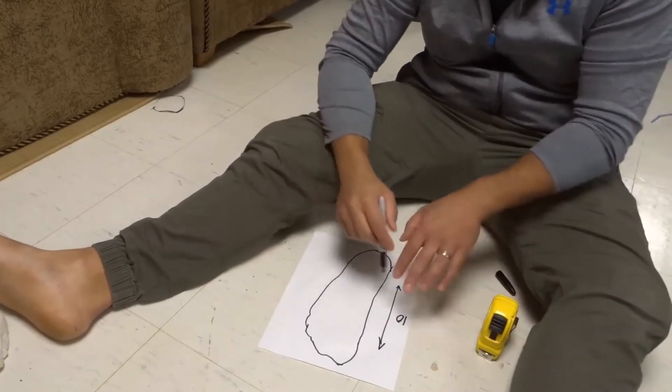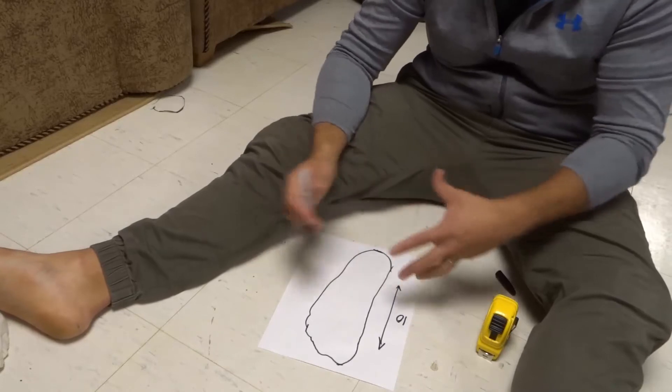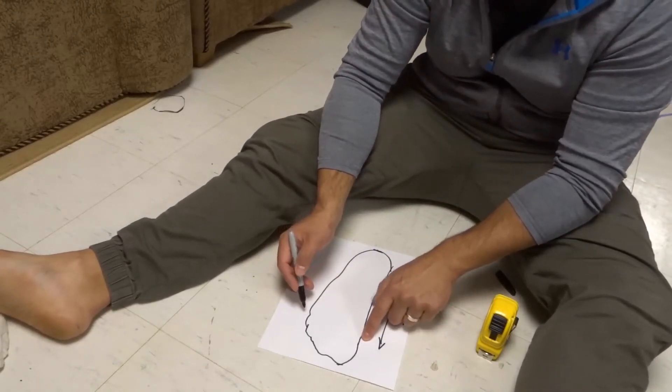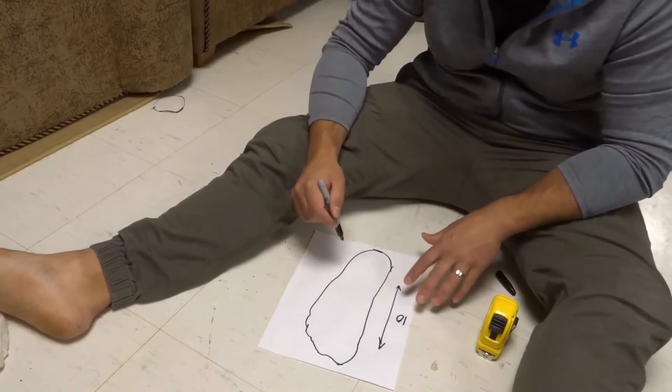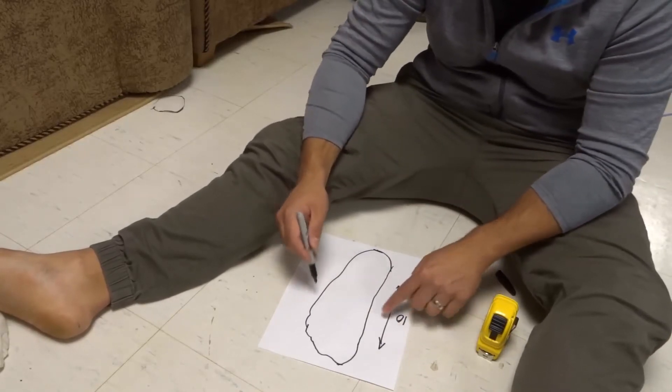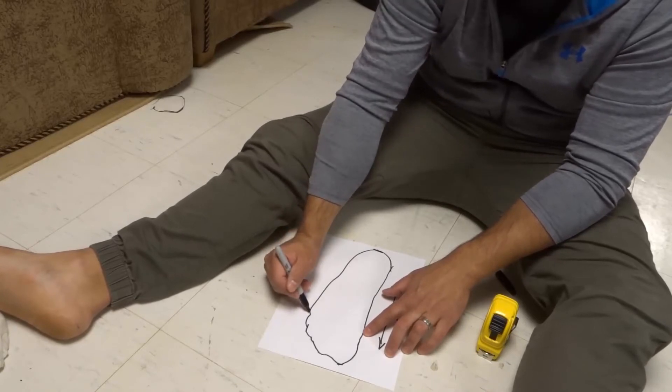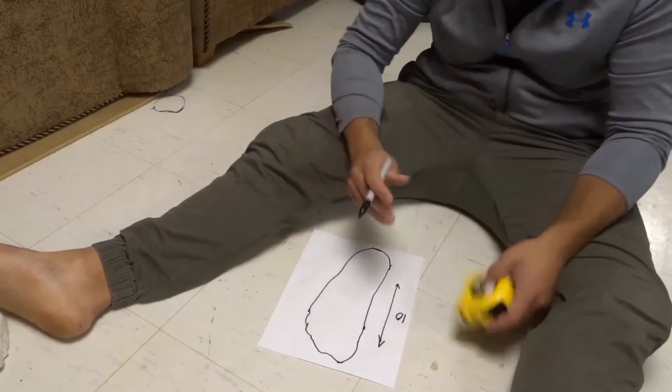Now next we're going to measure the width. And the width is going to be the distance from one side to the other on your foot in the widest part of the foot. So you want to find the widest part of the foot and measure it. Now for me it looks like this is basically the widest part of my foot right here. It's usually going to be close to the ball of your foot right over here, give or take.